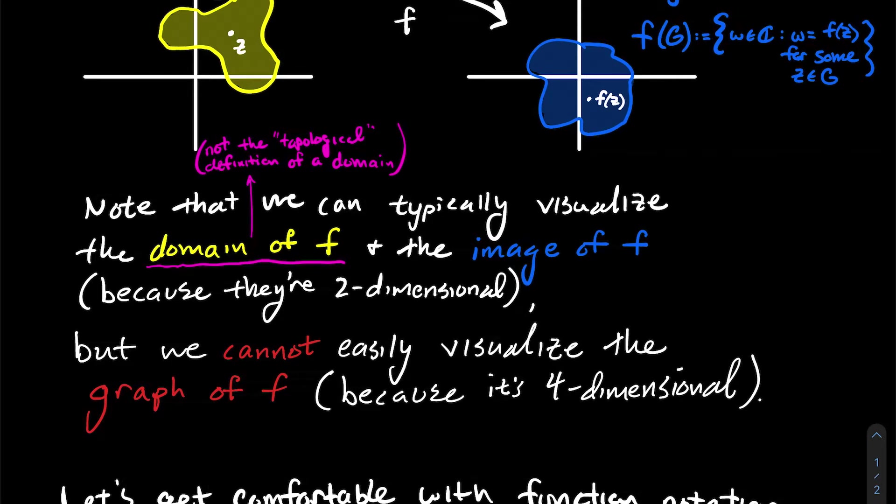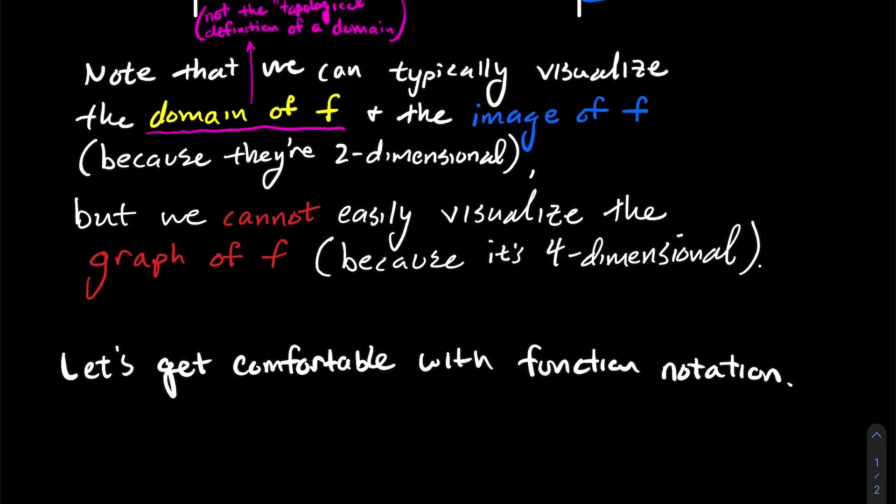And for the rest of this video even, we're not going to worry too much about what is this domain, what is its image look like under this particular function. So for the rest of this video we want to get used to function notation because it can be a little bit tricky sometimes. And the trickiness comes down to the fact that there are multiple ways to represent a complex number like we've talked about in previous videos.